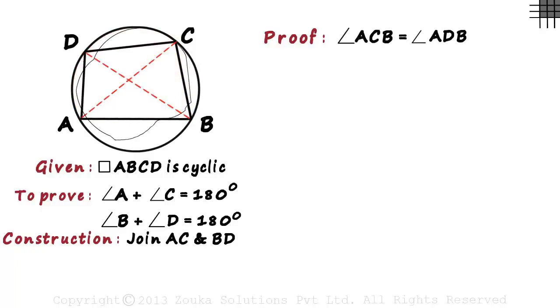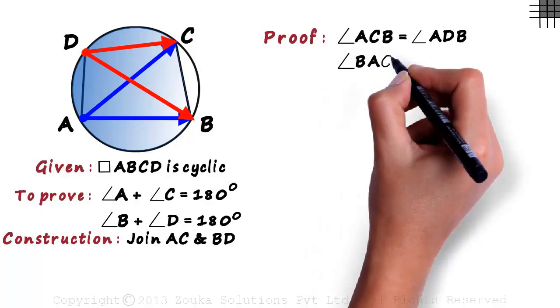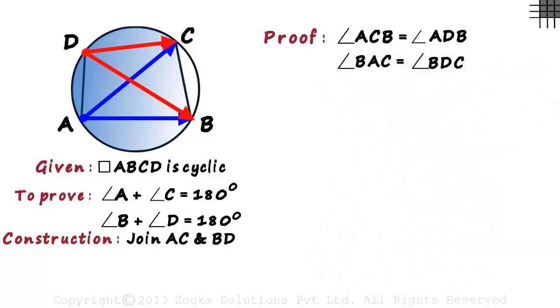Now look at this blue region. It is a major segment formed by chord BC and it contains two angles: angle BAC and angle BDC. So we can say that angle BAC is equal to angle BDC. Both these pairs are angles formed in the same segment.